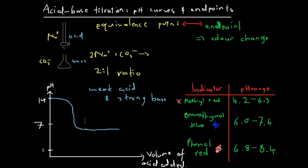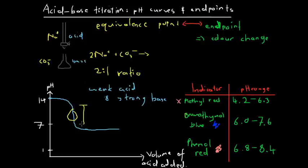While bromothymol blue and phenol red were both appropriate for a strong acid–strong base titration, here, because the equivalence point occurs at a slightly higher pH, we want the colour change to occur in that higher range. For that reason, phenol red would be a more appropriate choice of indicator — it changes colour at a slightly higher pH range than bromothymol blue, making it more appropriate to signify the end point of this titration.